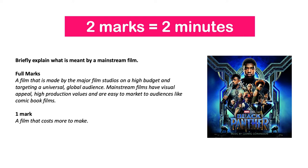Let's have a look at this two-mark question: 'Briefly explain what is meant by a mainstream film.' In two minutes you can realistically do two sentences at the most. For example: 'A film that is made by the major film studios on a high budget and targeting a universal global audience. Mainstream films have visual appeal, high production values and are easy to market to audiences, like a comic book film.' That will get you two marks. A one-mark answer would be something like 'A film that costs more to make' — very simple, that will probably just about get you one mark.